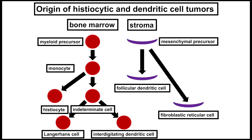Before we talk about these various uncommon forms of tumors, it's important to think about the different cell types that can give rise to these tumors. Broadly speaking, we can think about these cells as either bone marrow derived cells that come from a myeloid precursor that differentiates to become a monocyte, then either a histiocyte — the phagocytic cells of soft tissue — or into various forms of more specialized dendritic cells, Langerhans cells, and interdigitating dendritic cells.